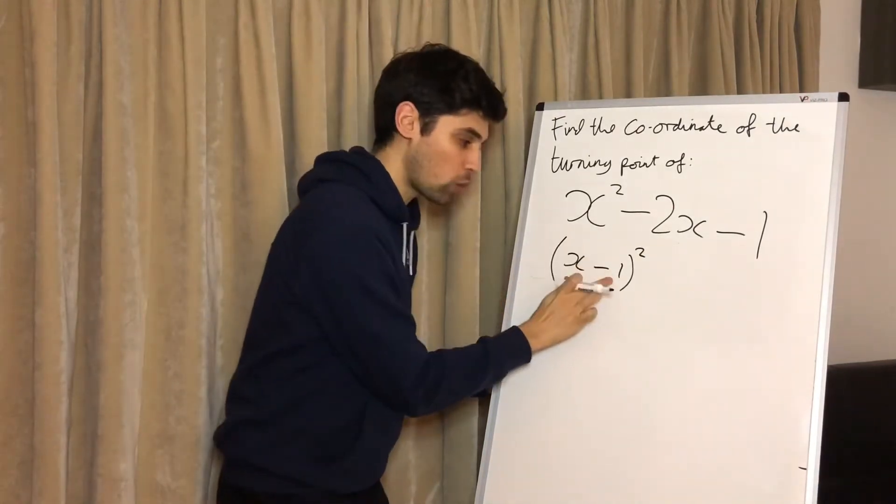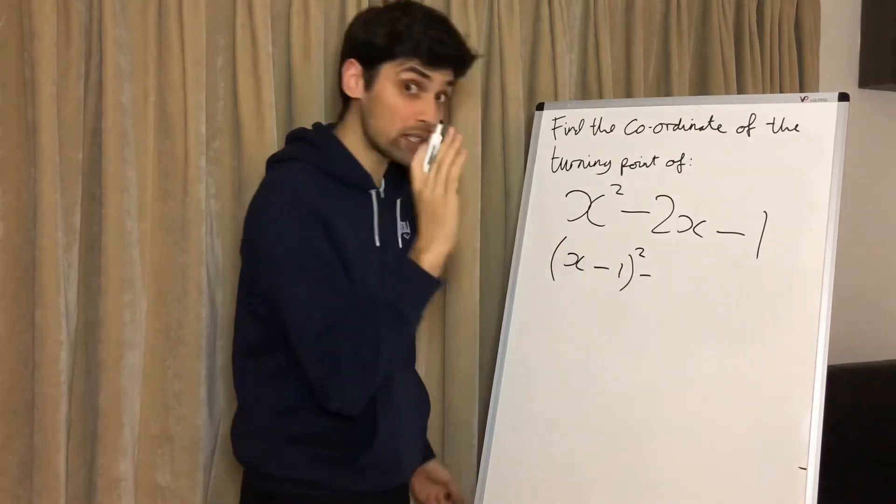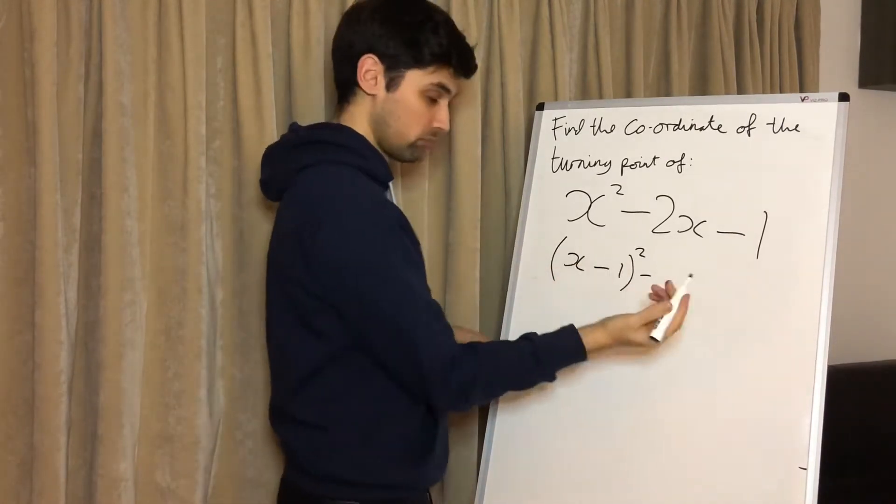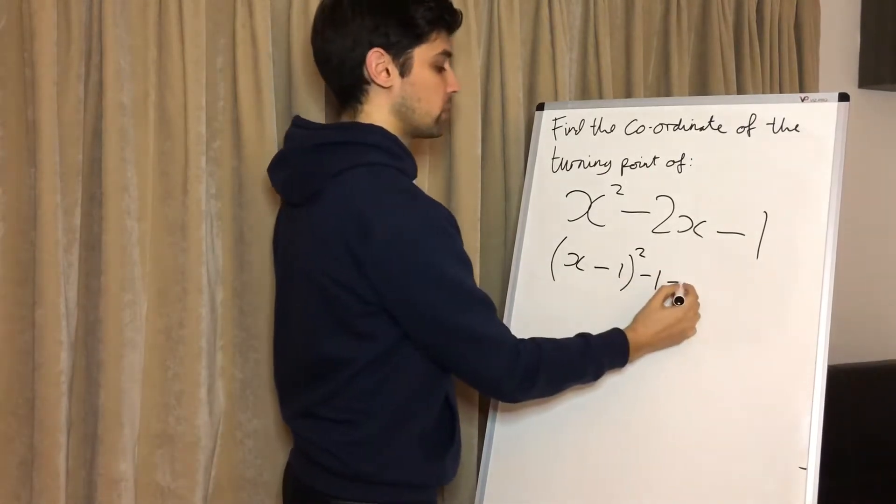Then we're going to minus this number squared. Like I always say, I do not care what this number is, it's always a minus. This number squared is just one and then we bring that number down, so minus one.